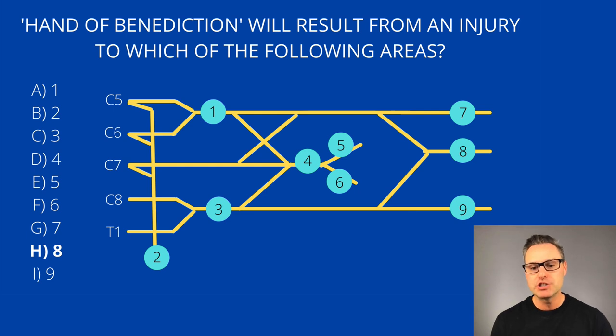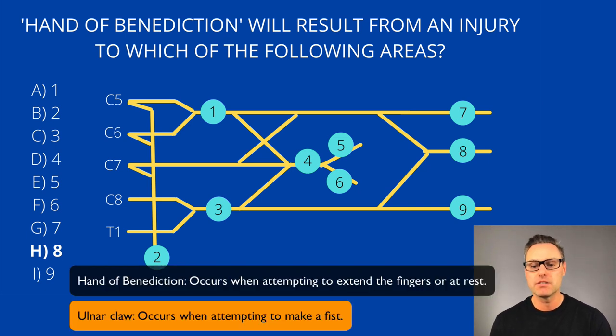Ulnar claw is due to lesion of the ulnar nerve at the wrist area. Now, as opposed to the hand of benediction seen with a median nerve injury, the ulnar claw affects the ring and the little finger and results in unopposed extension at the MCP joints with unopposed flexion at the IP joints. Remember, in the hand of benediction, the lateral two lumbricals and lateral half of the FDP are paralyzed. In ulnar claw, the medial two lumbricals are paralyzed. All right, on to the next question.